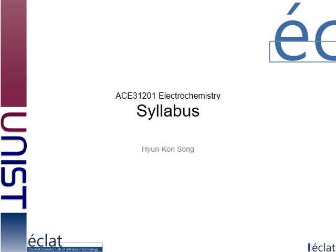Welcome to Electrochemistry for Undergraduate. The code number of this course is ACE31201. ACE stands for Advanced Chemical Engineering. My name is Hyun Gon-sung from Energy and Chemical Engineering, UNIST, Korea. I'm an electrochemist and my research topics are closely related to electrochemistry.